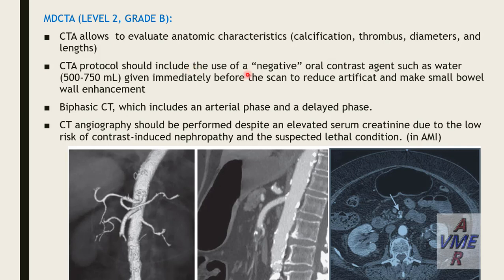CT angiography should include the use of negative oral contrast agents such as water, 500-750 mL, given immediately before the scan to reduce artifact and enhance small bowel visualization. Basic CT angiography includes arterial phase and delayed phase. CT angiography should be performed despite elevated serum creatinine, due to the low risk of contrast-induced nephropathy compared to the lethal risk of acute mesenteric ischemia. The benefit versus hazard must be weighed when elevated serum creatinine is present.